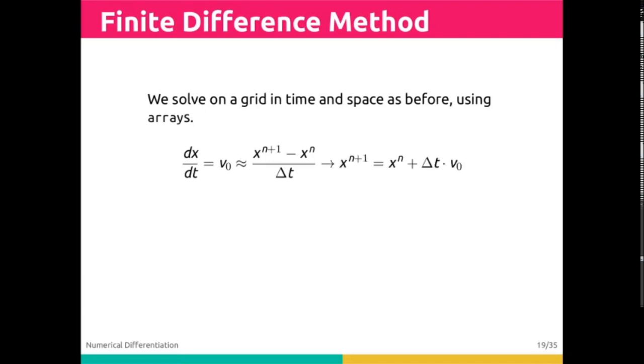If we rearrange this, we can write an expression for the n plus 1 instance of x as x n plus 1 equals x n plus delta t v naught. This gives us a way of calculating, on the basis of past points, what a subsequent point will be. We can do this in space, we can do this in time.